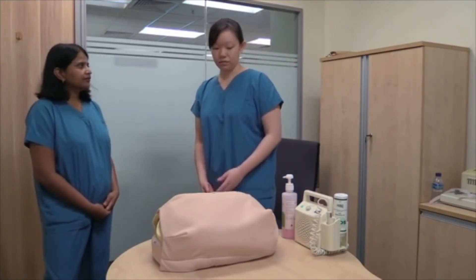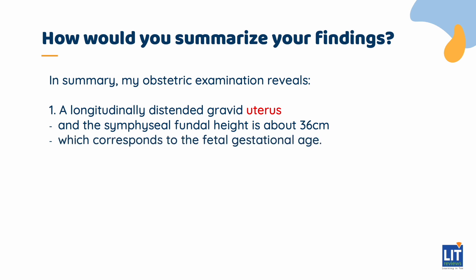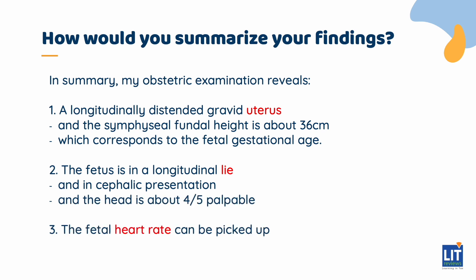In summary, my obstetric examination reveals a longitudinal distended gravid uterus, and the symphysis-fundal height is about 36 centimeters, which corresponds to the fetal gestational age. The fetus is in a longitudinal lie and in cephalic presentation, and the head is about four-fifths palpable. The fetal heart rate can be picked up at about 150 beats per minute. This is how you would summarize an obstetric examination.